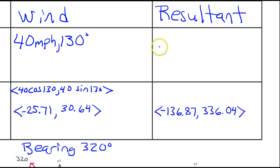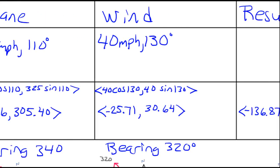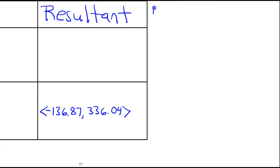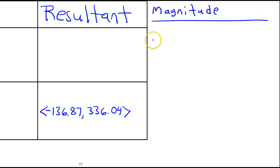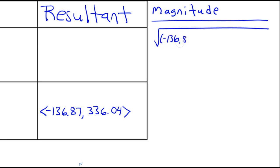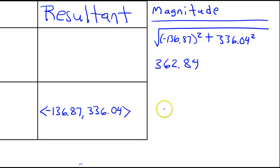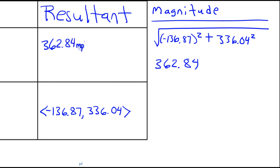We need the magnitude and direction, similar to what we had at the start. The magnitude is the square root of negative 136.87 squared plus 336.04 squared. That equals 362.84 miles per hour — that is the ground speed of the plane.